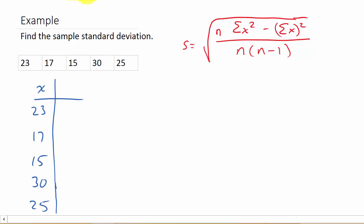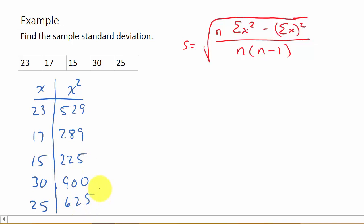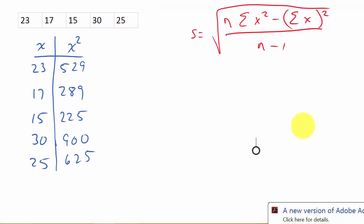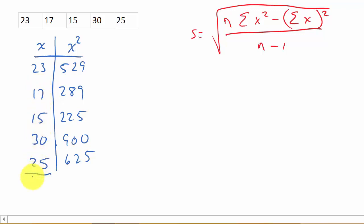So I've got 23 squared, which is 529. This is my X squared column. 17 squared is 289. 15 squared is 225. 30 squared is 900. And 25 squared is 625. Now let's sum these up. The sum of X is equal to 110, and the sum of X squared is equal to 2,568.